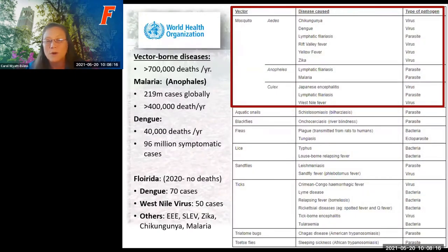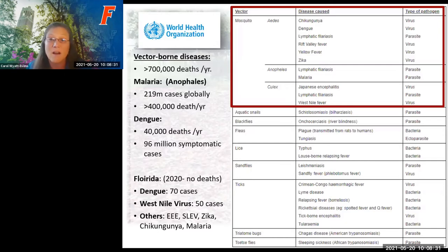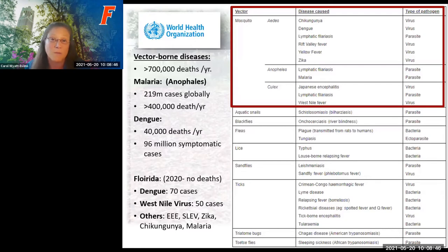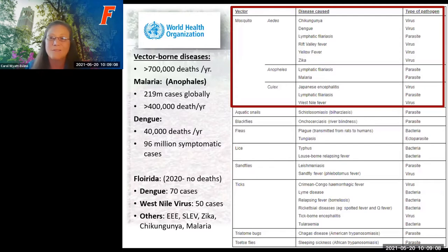According to the WHO, the World Health Organization, mosquitoes kill more than 700,000 people each year through vector-borne diseases. For example, malaria is a parasitic infection transmitted by the Anopheles mosquito. It causes over 219 million cases globally with more than 400,000 deaths every year, and most of those deaths occur in children under the age of five. Dengue is a viral infection transmitted by the Aedes mosquito, causing 40,000 deaths per year and an estimated 96 million symptomatic cases annually. If you get one of these diseases, you may not die, but you can have some long-lasting, major negative health effects.